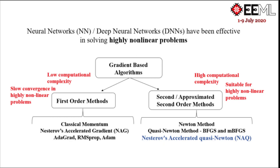Gradient-based algorithms are popular for training deep neural networks and can be classified into first and second-order methods. The first-order methods are simple and have low computational complexity but show slow convergence in highly non-linear problems. On the other hand, despite the high computational costs, second-order methods show faster convergence.